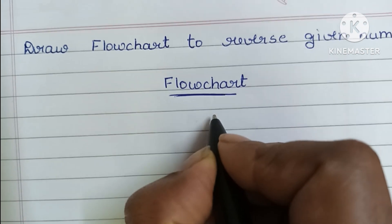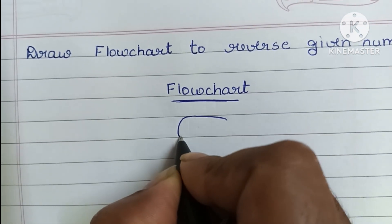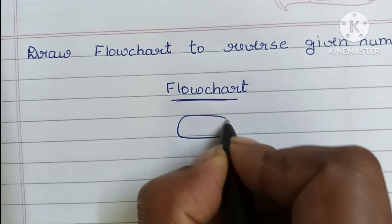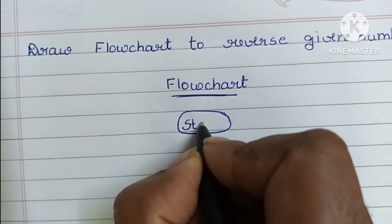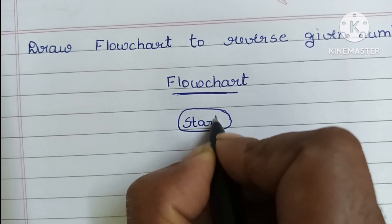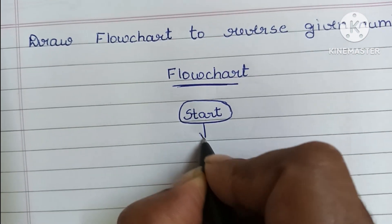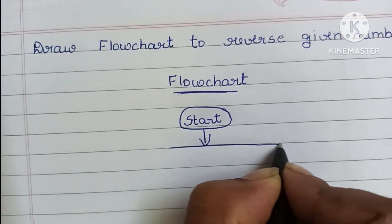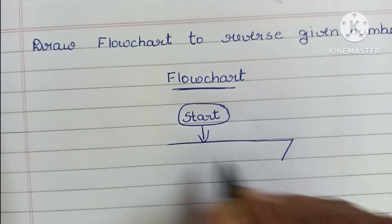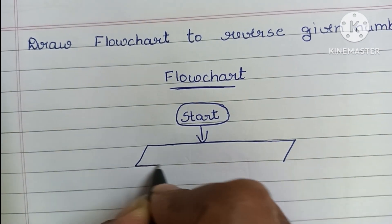A flowchart starts with the start statement, which is written within an oval shape. Next, we have to read input values — input values are always written within a parallelogram shape.